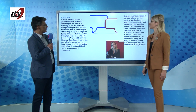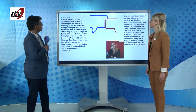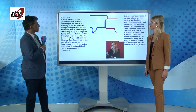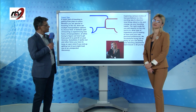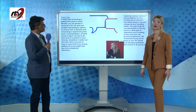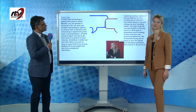For the last part of the lesson, here are some travel tips. A major part of traveling is getting from place to place. Whether you are abroad or traveling in the US, there are multiple transportation options to choose from. Part of traveling is experiencing new forms of transportation while figuring out how to get from point A to point B on your itinerary. Sometimes it works out; other times you need to keep an open mind — if you get lost, it just might lead you to an unexpected discovery.